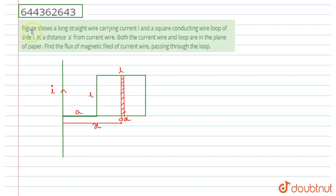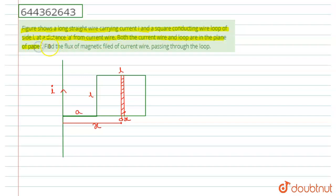The question is: the figure shows a long straight wire carrying a current I and a square conducting wire loop of side L at a distance A from the current wire. Both the current wire and the loop are in the plane of the paper. Find the flux of the magnetic field of the current wire passing through the loop.